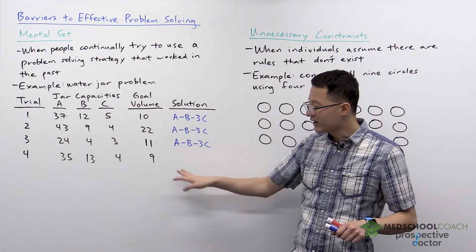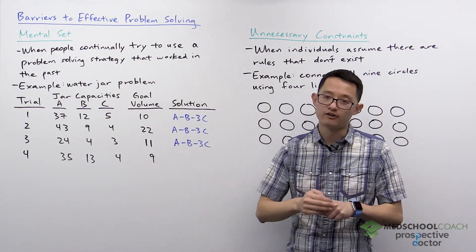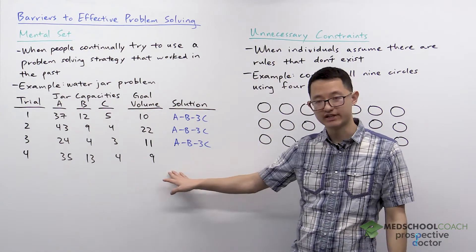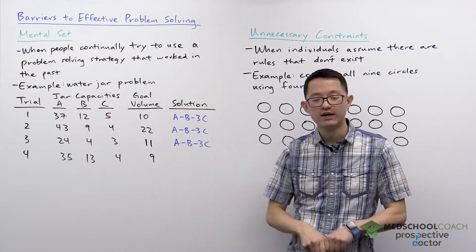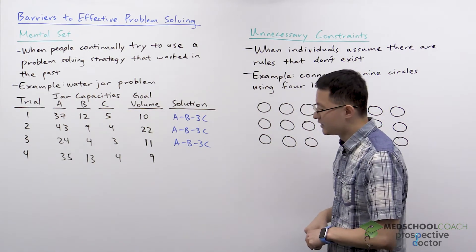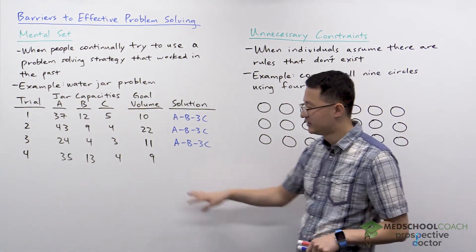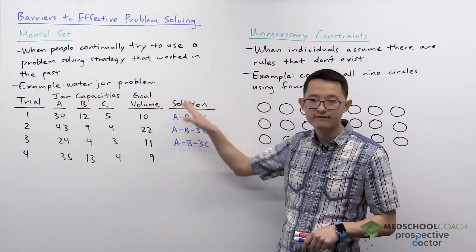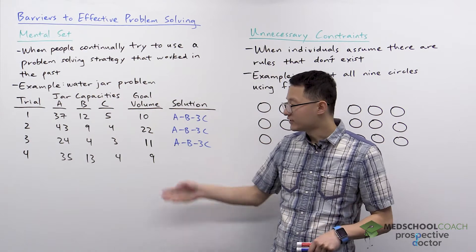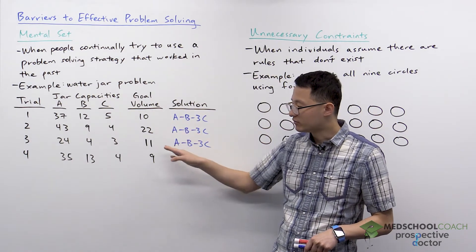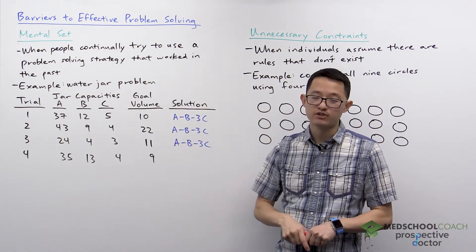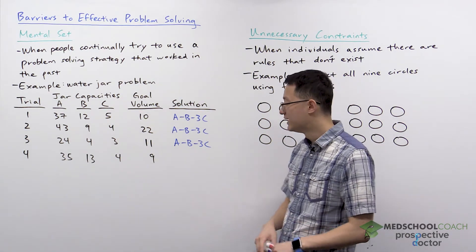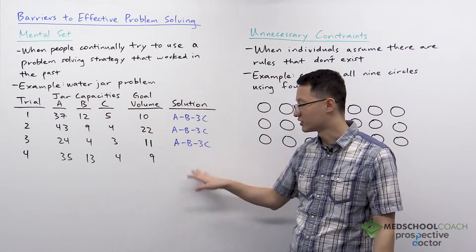What's fascinating, though, is what happens when they come to trial four. If you want to participate, feel free to pause the video and see if you can solve trial four on your own. What's interesting is that trial four is actually easier than any of the other trials. However, after solving trials one, two, and three, most individuals are going to have a really tough time with trial four. It's going to take them a long time.